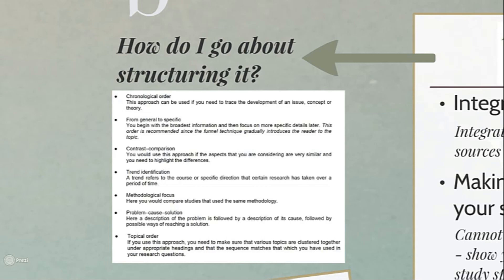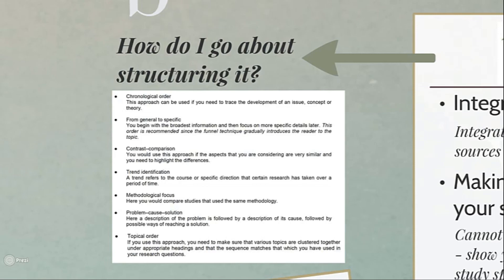Although any of those structures could be appropriate, chronological, general to specific, and topical order are the ones used most often at this level of academic study. That's a general overview of the literature review. I hope this video helped you out — start with your reading early, it really does take more time than you think, but as you progress it will become all the more fun. All the best!